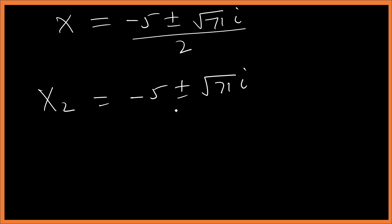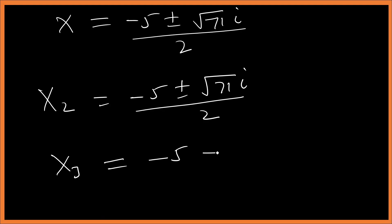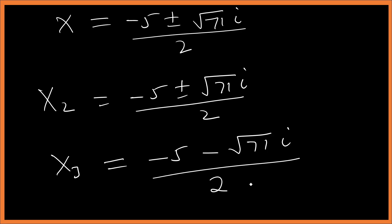So our second solution is x = (-5 + √71·i) / 2 and our third solution is x = (-5 - √71·i) / 2. Those are all three solutions. Thanks for watching and don't forget to subscribe!